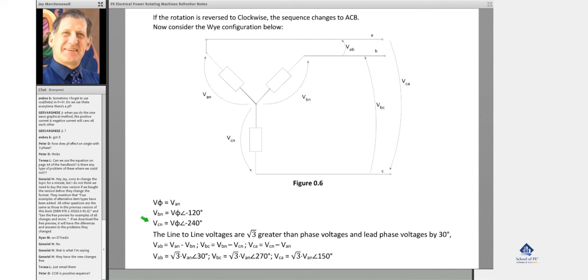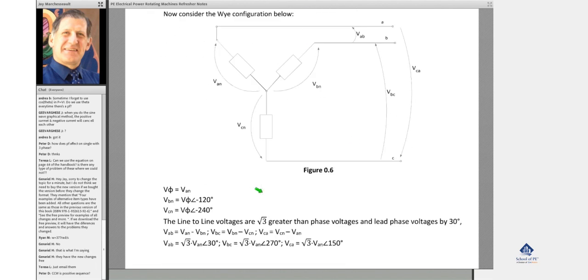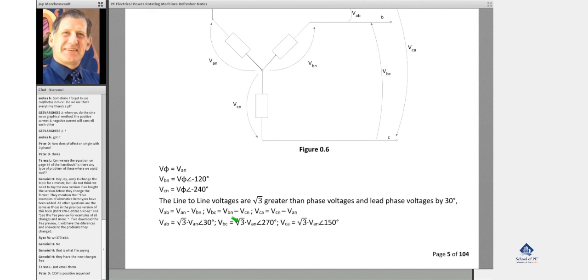We're going to say A to neutral is at zero. That puts B to neutral at minus 120 and C to neutral minus 240, which is the same thing as positive 120. And that's the configuration that's been shown right here.